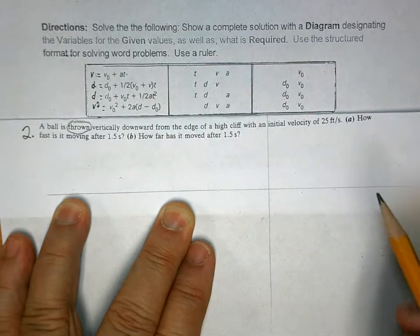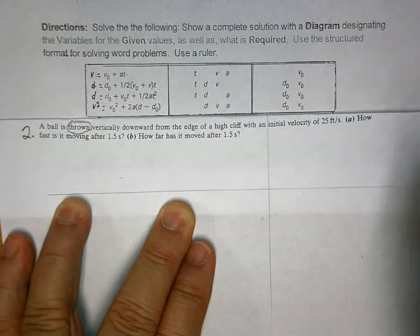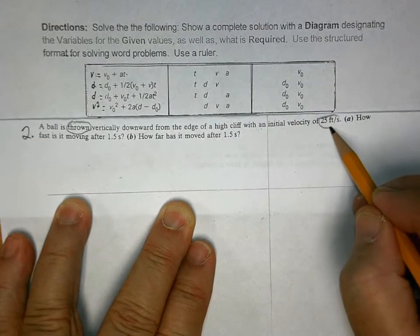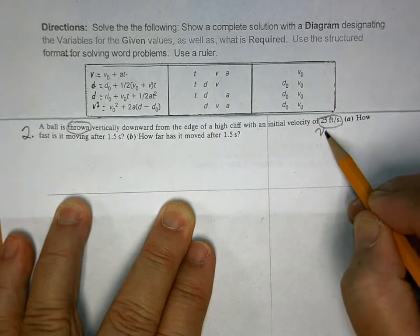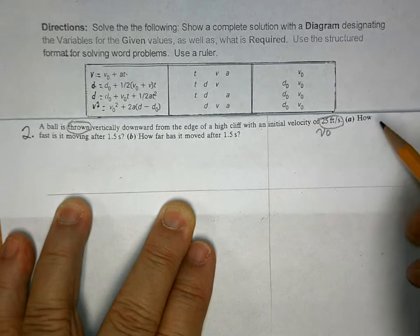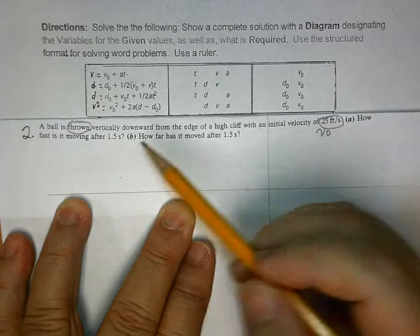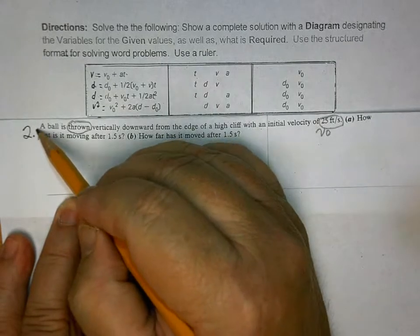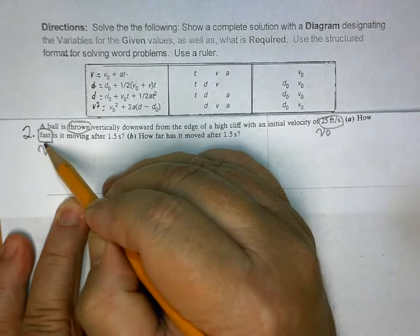That means that V0 is not equal to 0, right? In fact, you have a V0 here. V0, right? And what you're asked for is VF, right?